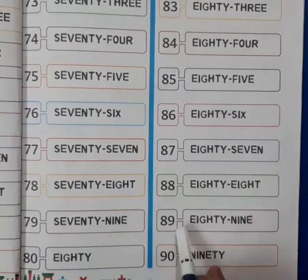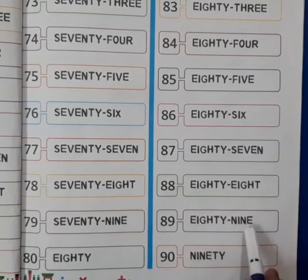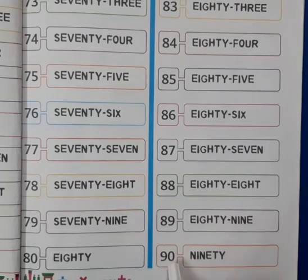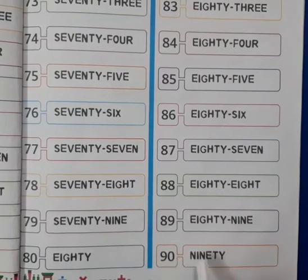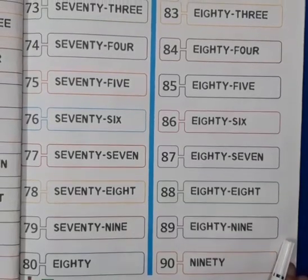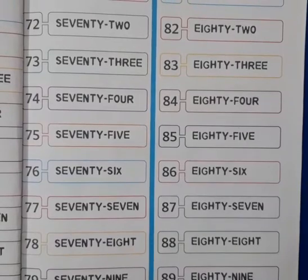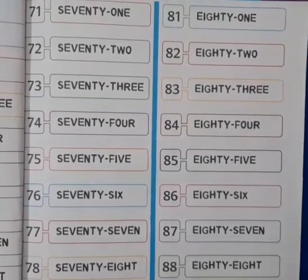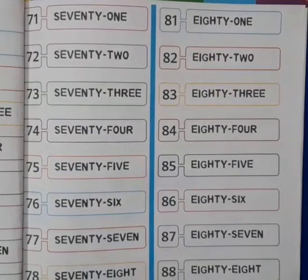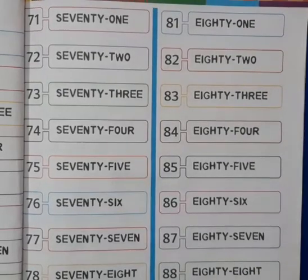This is 89. E-I-G-H-T-Y, N-I-N-E, 89. This is 90. N-I-N-E-T-Y, 90. I hope kids, number names from 71 to 90 is clear to you. We will soon meet with a new topic. Stay safe, stay healthy and do practice it at your home.